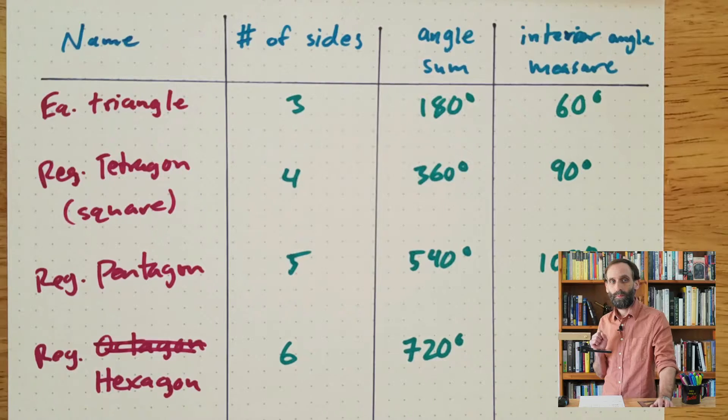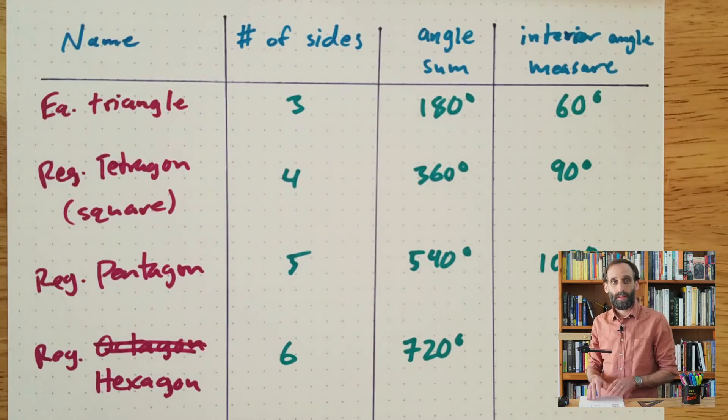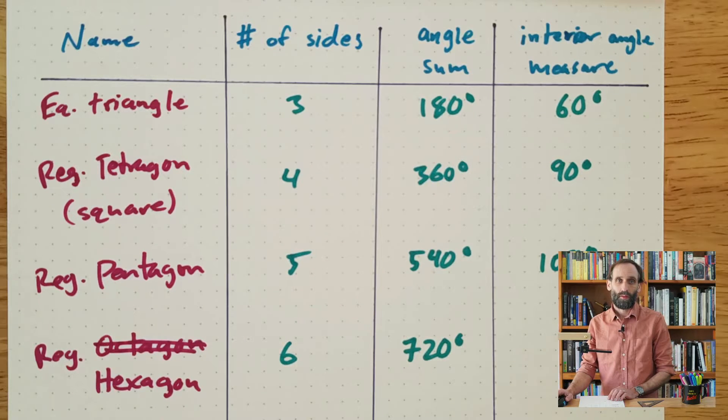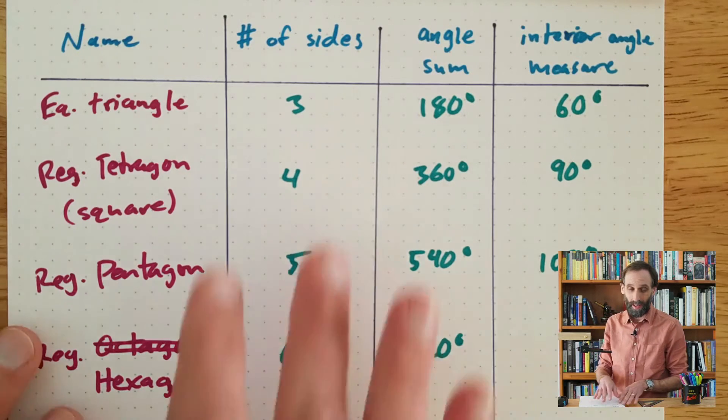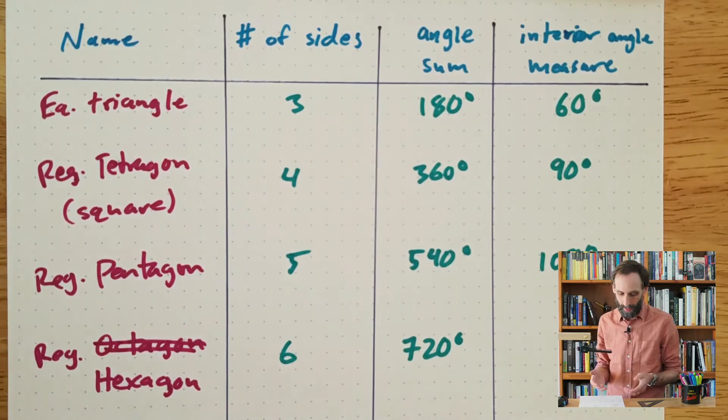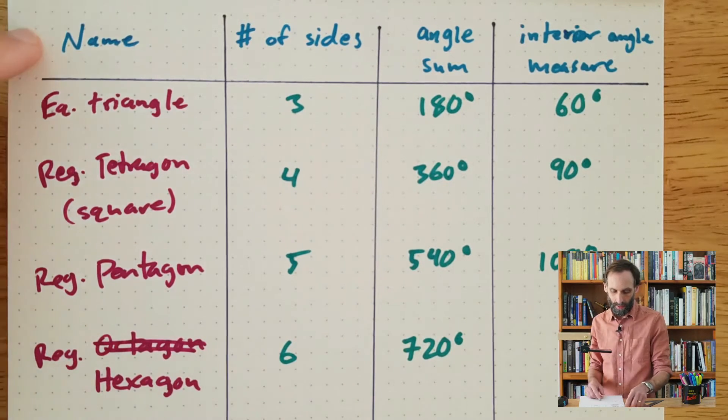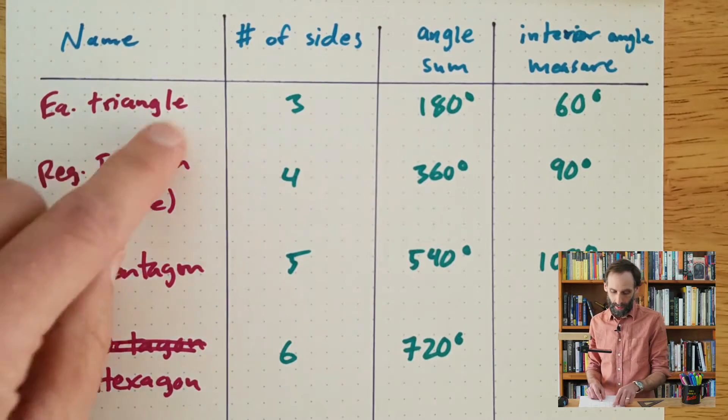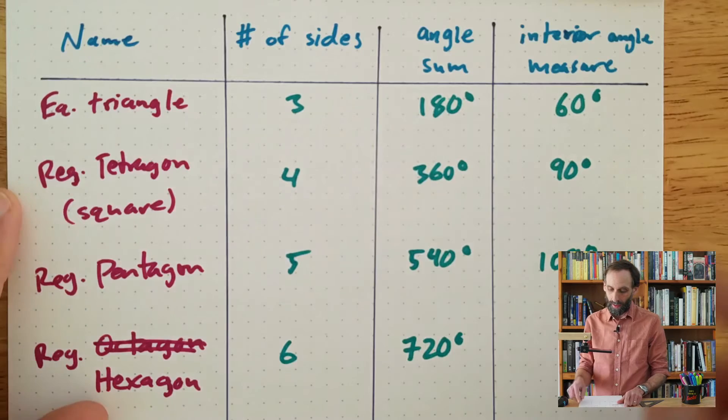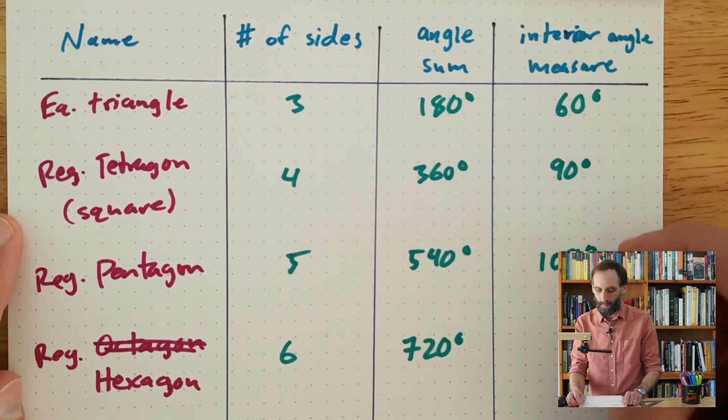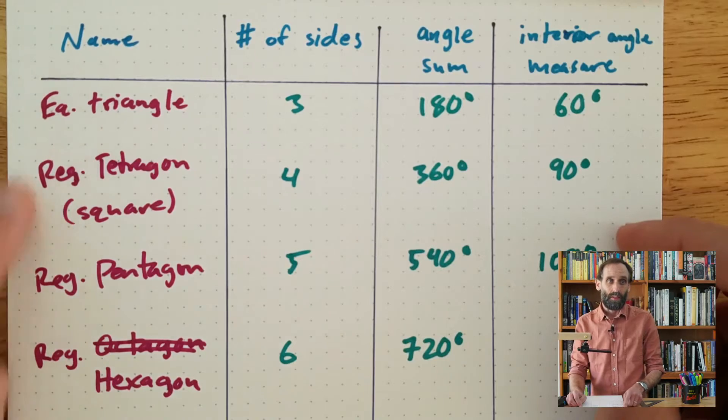Before we explore which regular polygons can tile a plane or surface, there are two things that I think you will find very helpful. The first thing is this table right here, which actually comes from one of the practice exercises from the previous lesson. It's a table of regular polygons where in the first column we have the name of the regular polygon, the next column shows the number of sides, the next column shows the angle sum of the polygon, and the final column is the interior angle measure of each angle in the regular polygon.